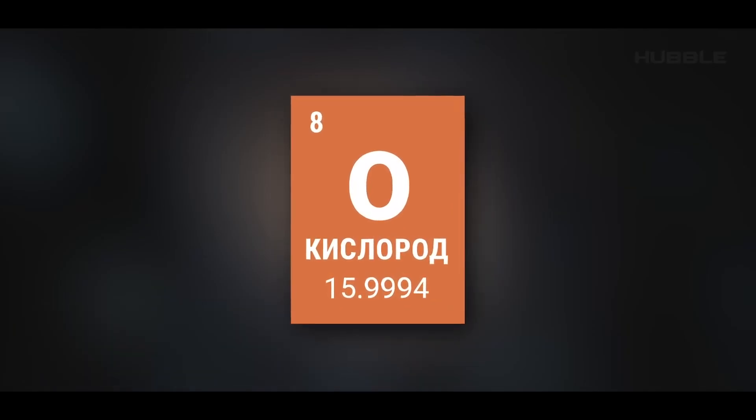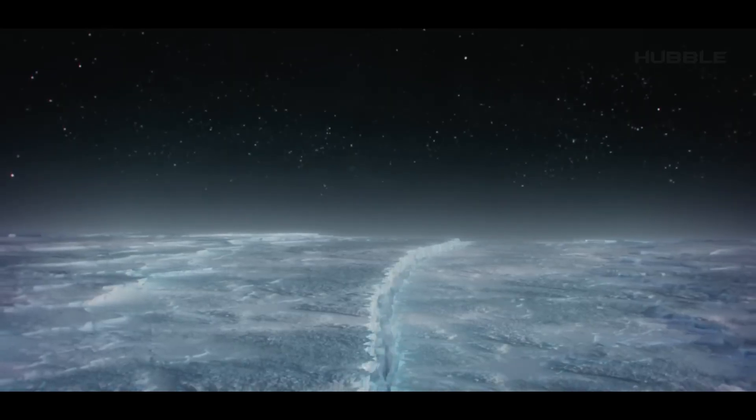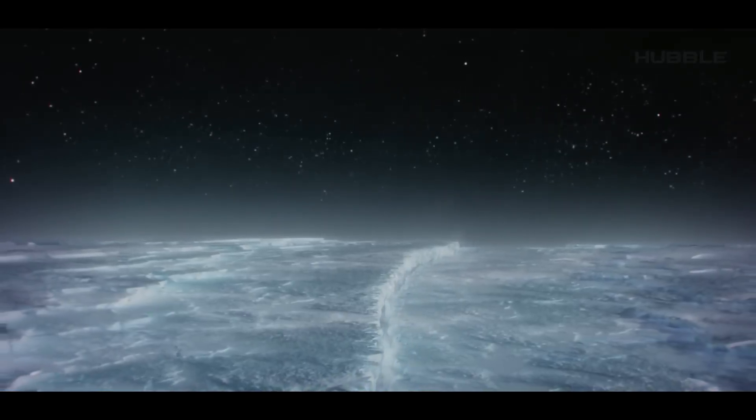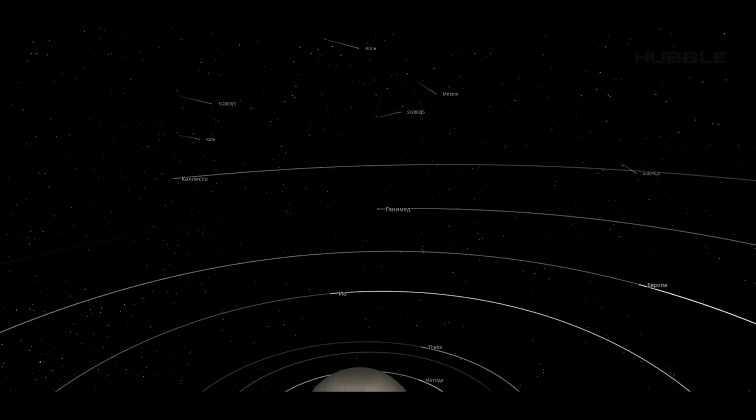Scientists were sure that the frozen moon generates about 1,000 kilograms of oxygen every second. But in reality, it turned out to be only 1,000 tons per day. If you add to this the intense radiation coming from Jupiter, the conditions for the emergence of life are not optimistic at all.